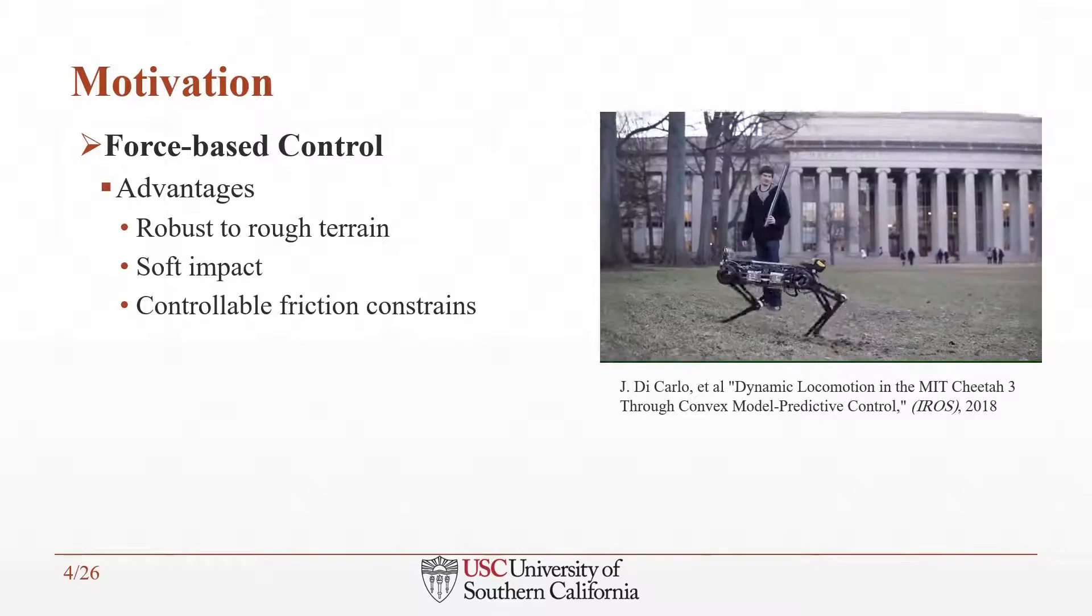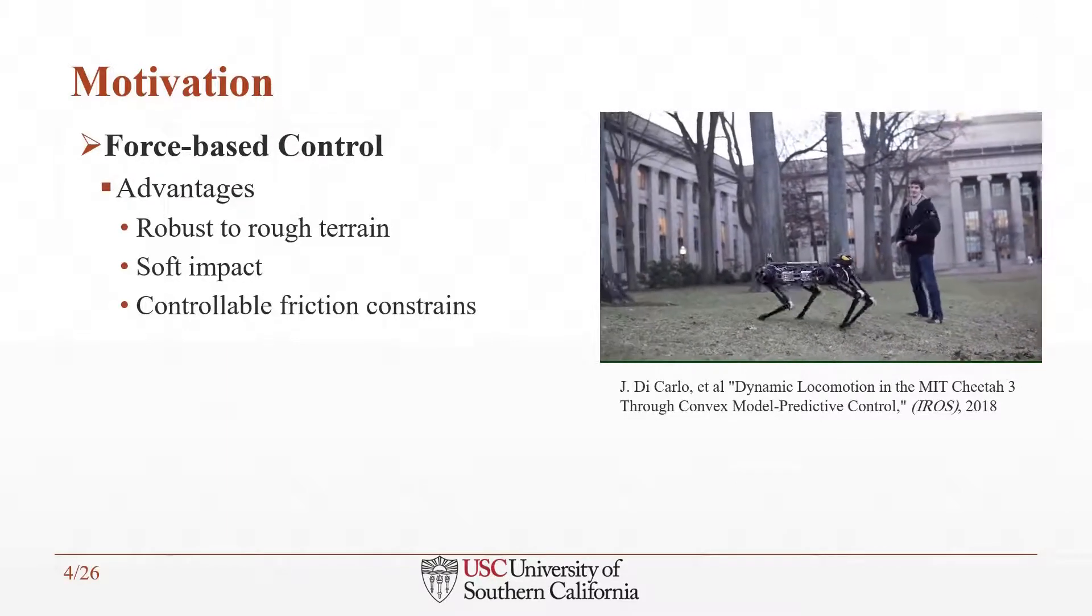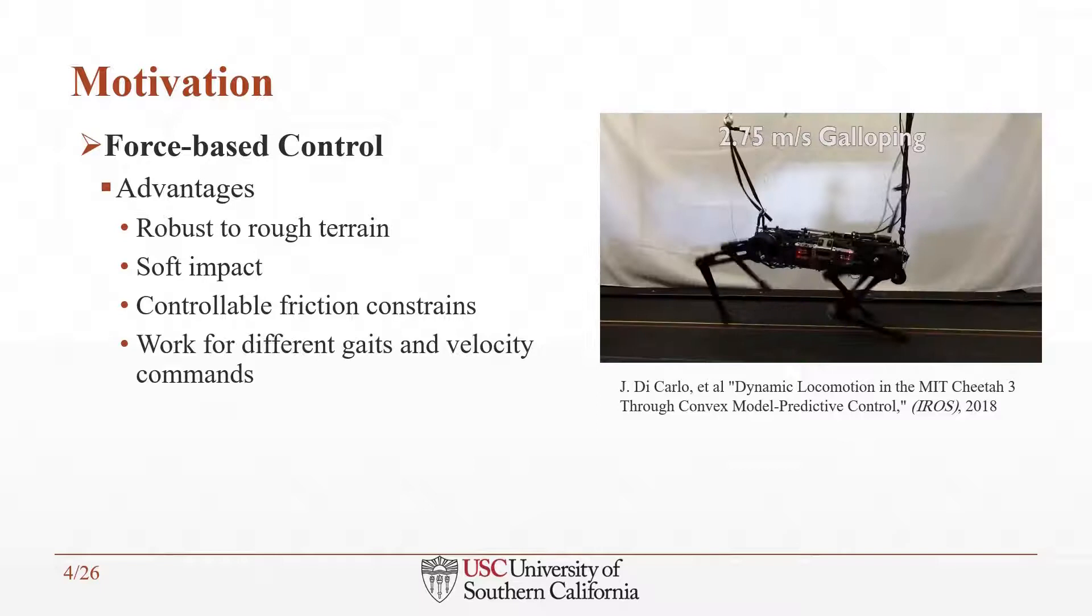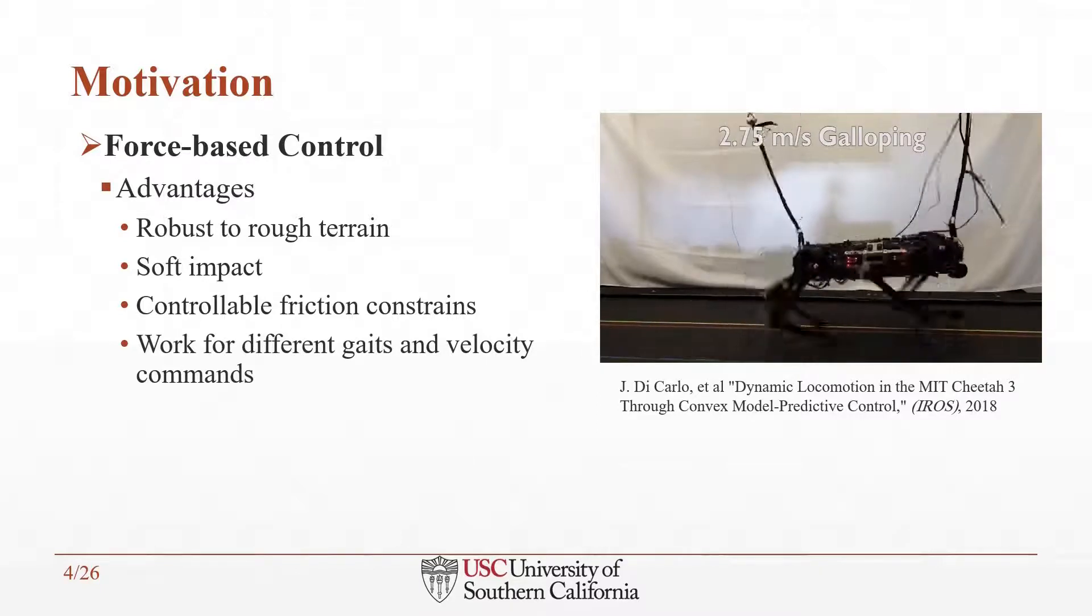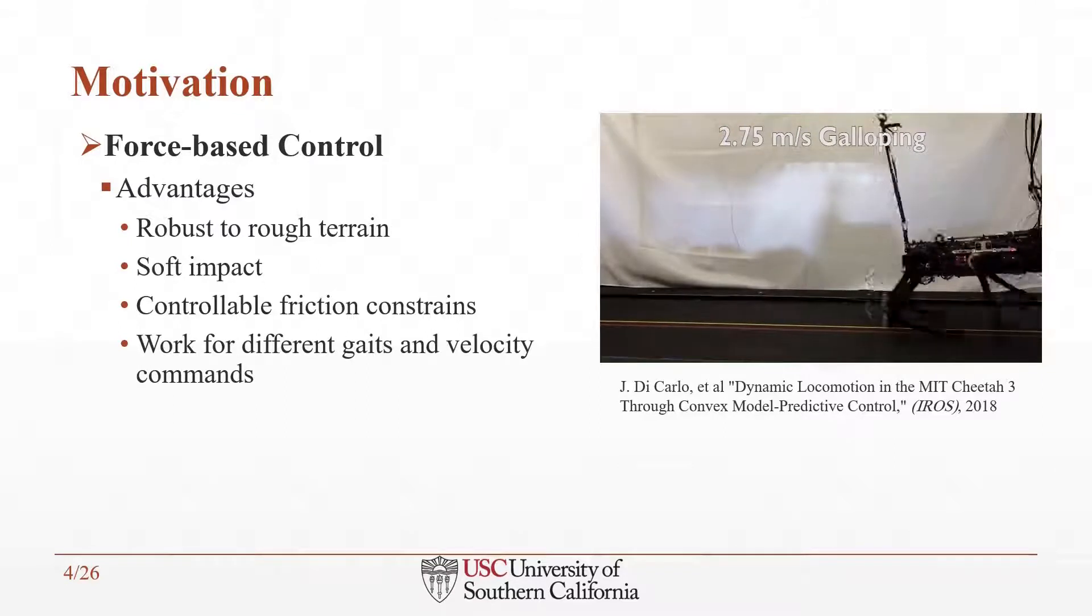While having a soft impact on the robot, by defining the friction constraint, it can walk on different surfaces with different friction coefficients such as grass or hardwood. Moreover, it can be implemented in various gaits such as bounding, trotting, and galloping with different velocity commands.